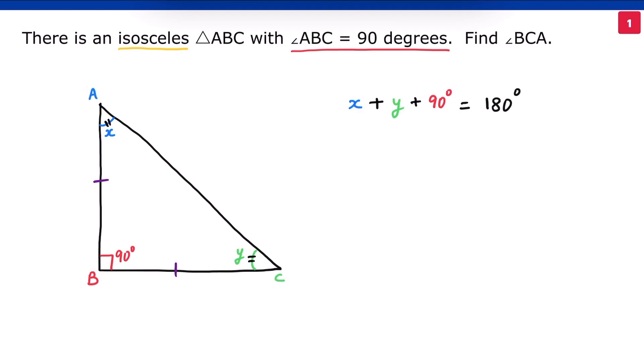We can replace X with Y. 2Y equals 90 degrees, and Y is 45 degrees. Y is angle BCA. Angle BCA is 45 degrees. We are done.